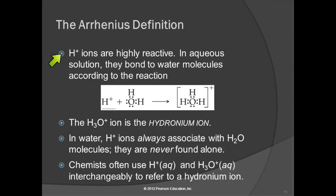Hydrogen ions are highly reactive. What exactly is a hydrogen ion? Let's think about a hydrogen atom. How many protons does a hydrogen atom have? It has one. And how many electrons does it have? One. So if a hydrogen atom loses one electron to become a hydrogen ion, what's left? Just a proton. So a hydrogen ion really is just a proton.